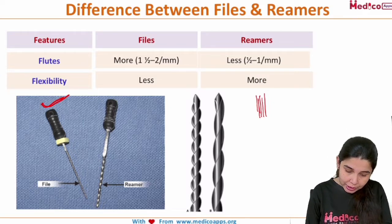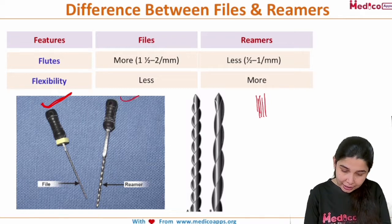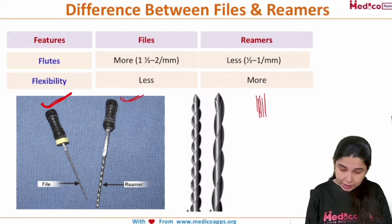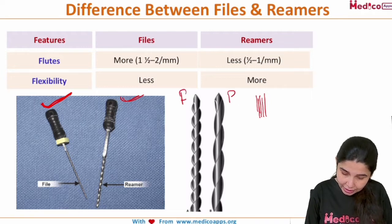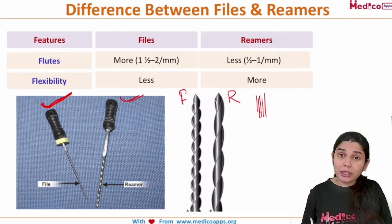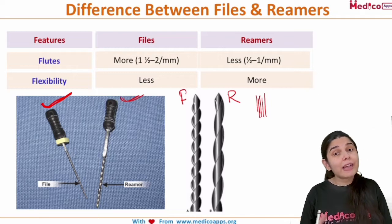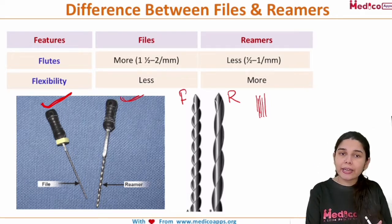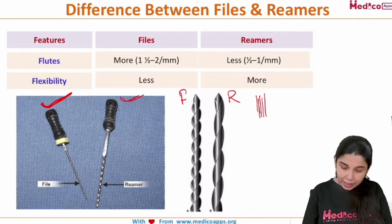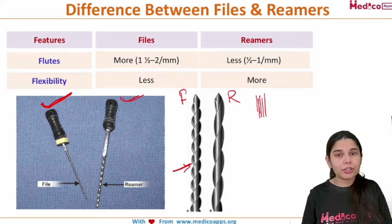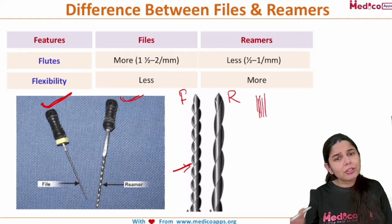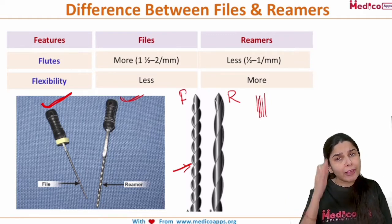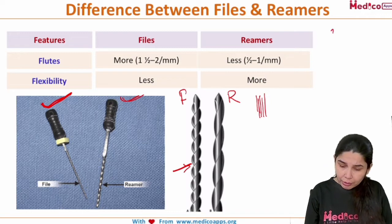As you can see in this image, this is a file and this is a reamer. Which one has more fluids and more rotation? Definitely, the files have more rotation whereas reamers have less rotation. Along with that, I want to mention a very important point about the shaft. The shaft is the area connecting the blade and the handle of the instrument — it connects the working end and the handle.